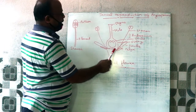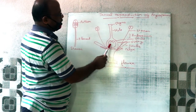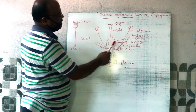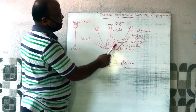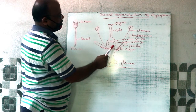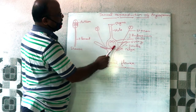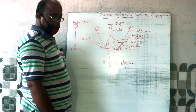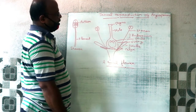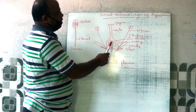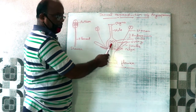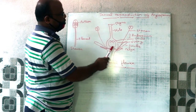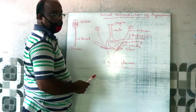The mature Ovary is otherwise known as a Fruit. Inside the Ovary, one or more integument-covered Megasporangia are found. Such integument-covered Megasporangia are otherwise known as Ovules. Each Ovule, after fertilization, bears an embryo.